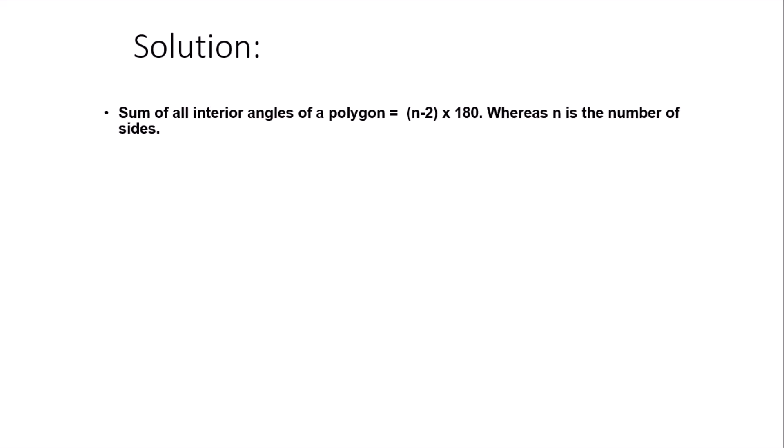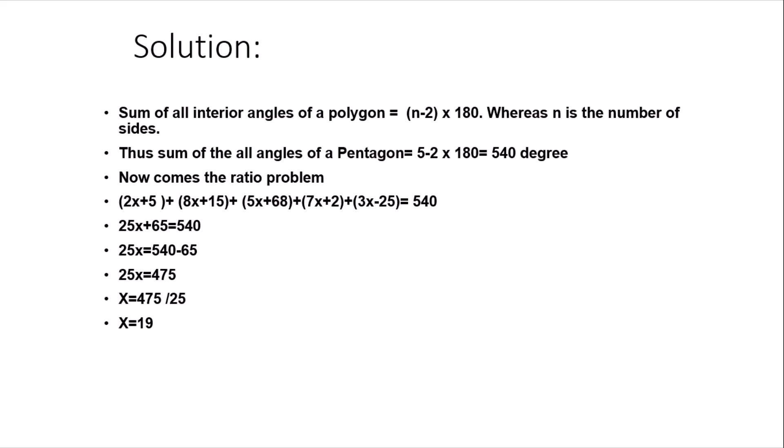Depending upon the number of sides of the polygon, you can simply replace the value in n and find the total value of the angles. Because in our question the polygon is a five-sided figure, it's a pentagon, and the sum of its angles comes out to be 5-2 multiplied by 180, that is 540 degrees. After we know the sum of all angles, the problem is simply now a ratio problem. We write the equation with the ratios and find the common factor, that is the value of x. By solving for x in the ratios, we come to know that the common factor x is equal to 19.